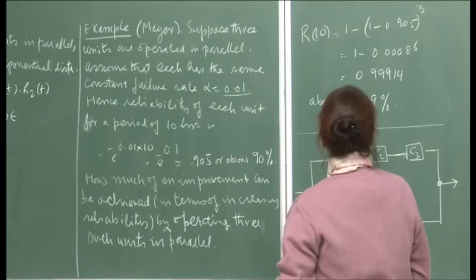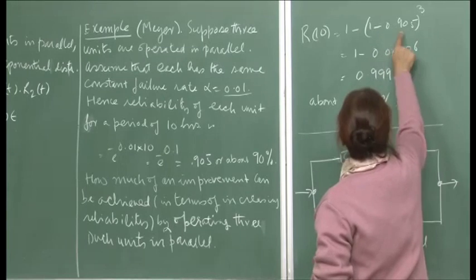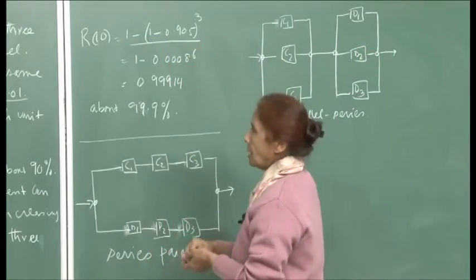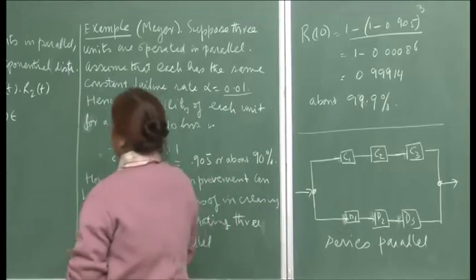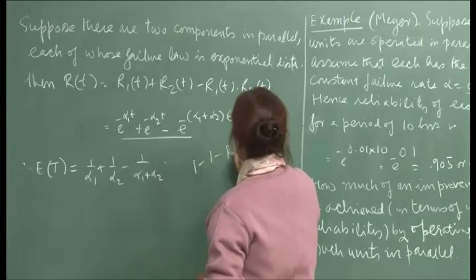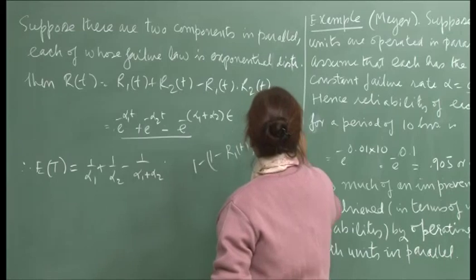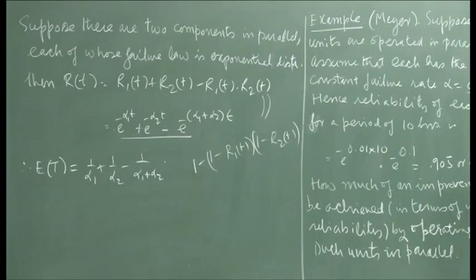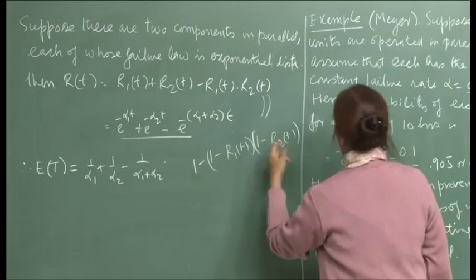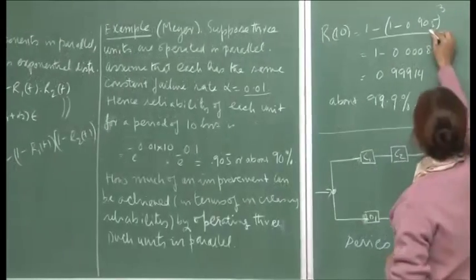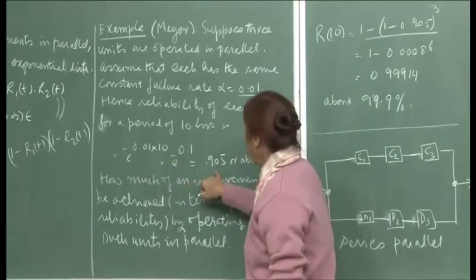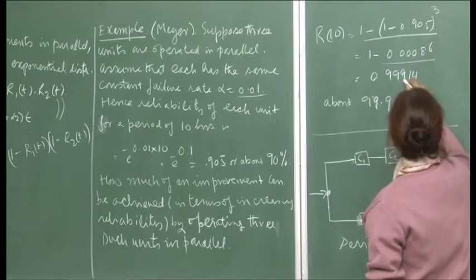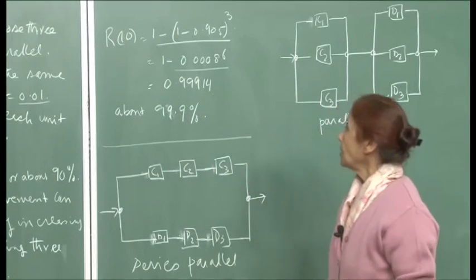By our formula for 3 identical components in parallel: r(t) = 1 − (1 − r(t))^3 = 1 − (1 − 0.905)^3. This comes out to be 0.99914. Therefore the reliability has gone up to 99.9%. With one component the probability of operating for 10 hours was only 90%, but with 3 in parallel you are almost certain the device will still be functioning at the end of 10 hours.